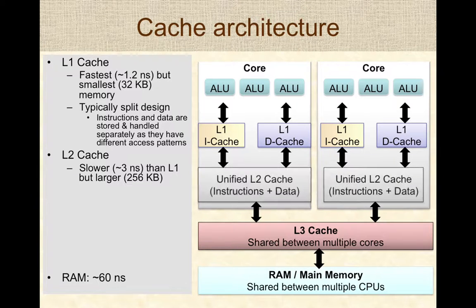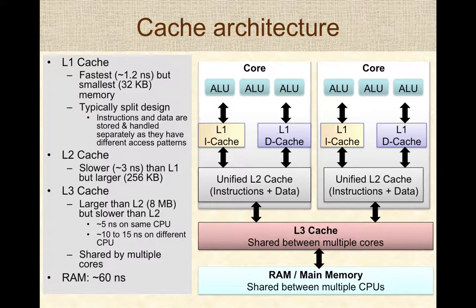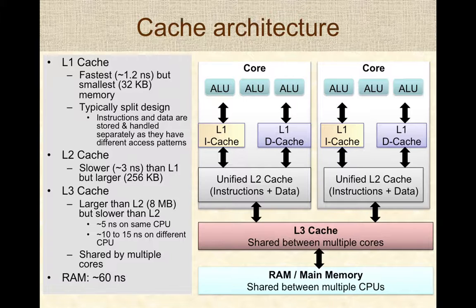The next tier is the L2 cache — a unified cache where instructions and data are stored together. The L1 and L2 caches are on a per-core basis, so a multi-core CPU will have multiple independent L1 and L2 caches. The L3 cache is a shared cache across all cores — typically the largest but slowest, shared by all cores on the CPU.